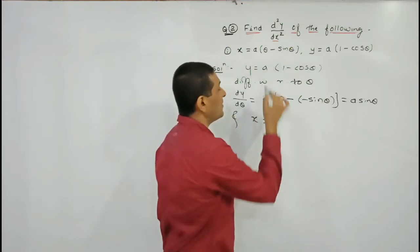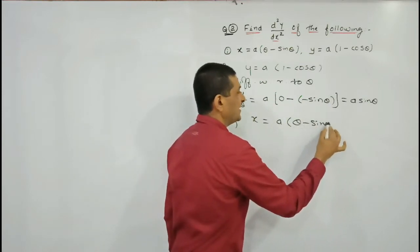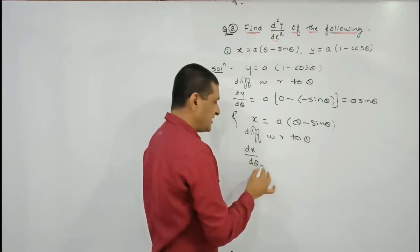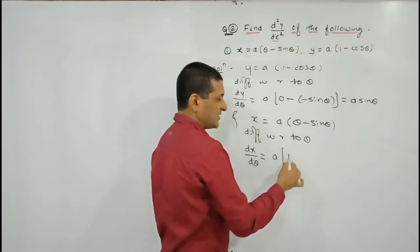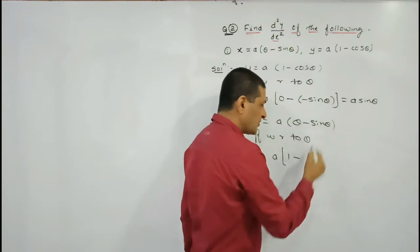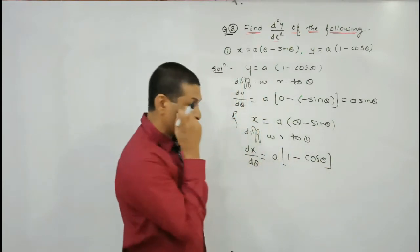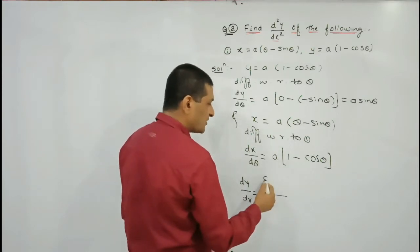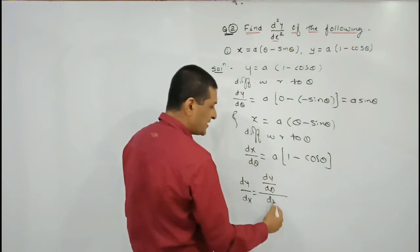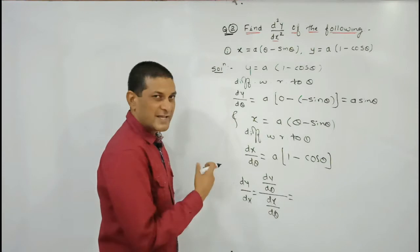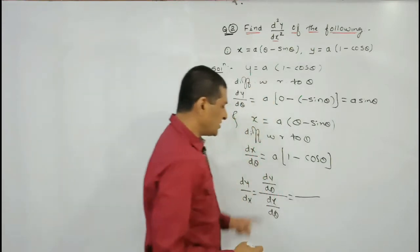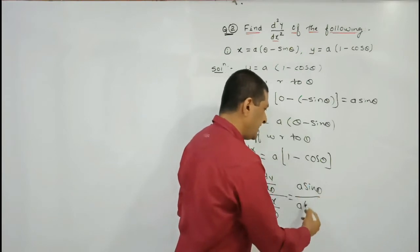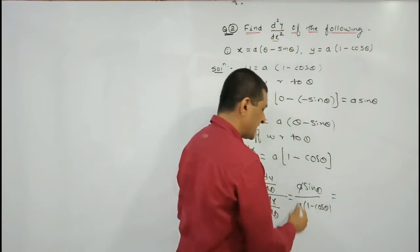In the solution, first we consider y = a(1 - cosθ). Differentiating with respect to parameter θ: dy/dθ = a·sinθ, since the derivative of cosθ is -sinθ and minus times minus gives plus. Now x = a(θ - sinθ). Differentiating with respect to θ: dx/dθ = a(1 - cosθ), since derivative of θ is 1 and derivative of sinθ is cosθ.